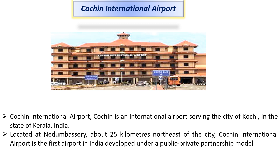As you can see on the screen, Cochin international airport is an international airport serving the city of Kochi in the state of Kerala, India. It is the first airport in India developed under a public-private partnership model.